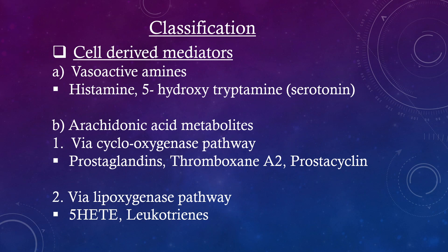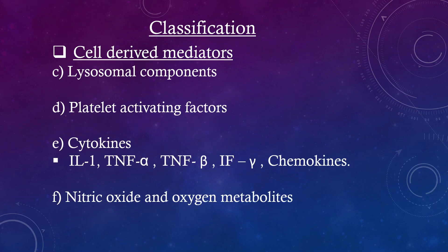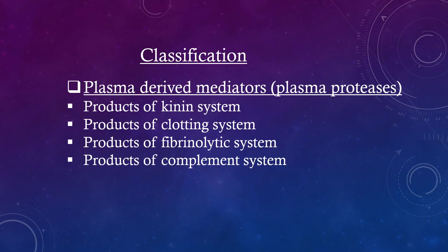Classification. Cell-derived mediators include: vasoactive amines — histamine and 5-hydroxytryptamine (serotonin); arachidonic acid metabolites via the cyclooxygenase pathway — prostaglandins, thromboxane A2, prostacycline; and via the lipooxygenase pathway — 5-HPETE and leukotrienes. Also included are lysosomal components, platelet activating factors, cytokines (IL-1, TNF-alpha, TNF-beta, IFN-gamma, chemokines), nitric oxide, and oxygen metabolites. Plasma-derived mediators (plasma proteases) include products of the kinin system, clotting system, fibrinolytic system, and complement system.